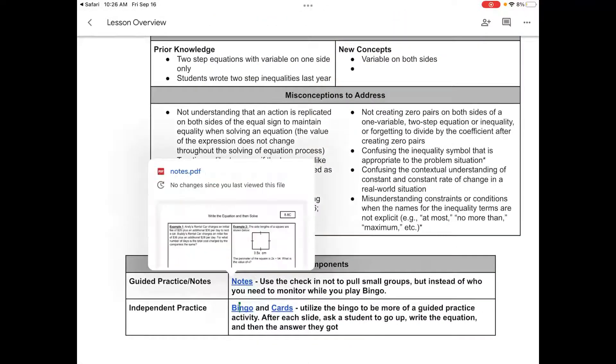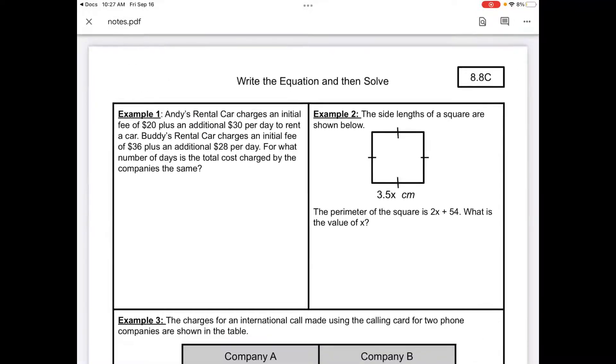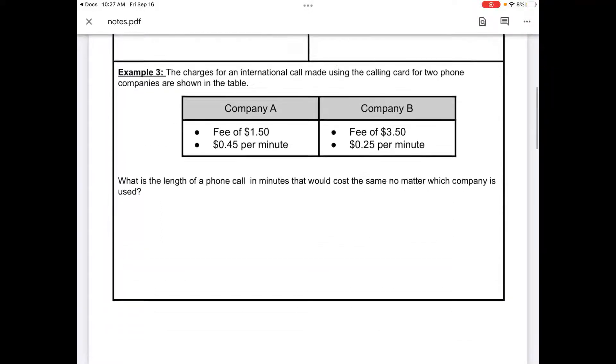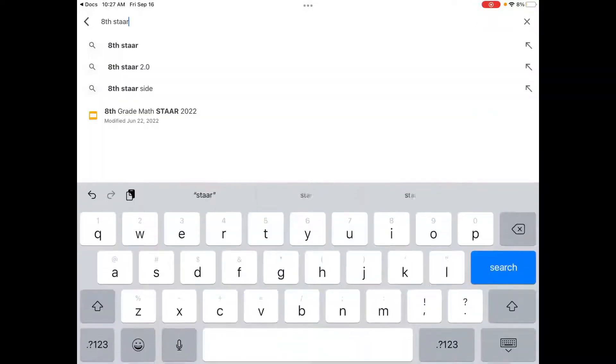I want to show you the notes and the practice. So notes here are going to be where students are actually writing them, setting up equations. There's different ways students can be tested on this TEKS. Sometimes there's some geometric concepts that are involved. As you can see with example number two, they're asking about the perimeter. If the perimeter of the square is 2x plus 54, then what's the value of x? Over here, students are needing to read word problems, read it from a table, and be able to write an equation.